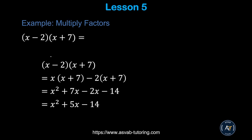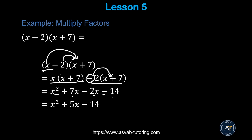Here's another example with a negative inside the parenthesis. Multiply (x + 7)(x − 2) the same way: x times x is x squared, x times 7 is 7x, negative 2 times x is negative 2x, and positive times negative gives negative 14. Now simplify the like terms: 7x and negative 2x have different signs, so subtract to get 5x. The answer is x squared plus 5x minus 14.